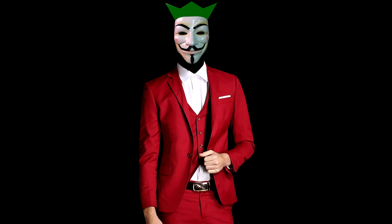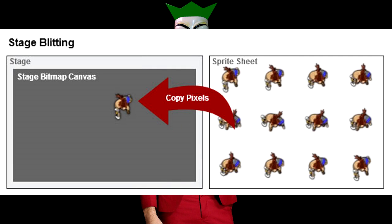And once you guys know that, we're going to put it to work. I'm going to go over loading a common binary file format from scratch — we're going to learn to load a bitmap file. Then we're going to use the pixels loaded from that bitmap to draw sprites, and we're going to learn about spriting operations like blitting, clipping, chroma keying, and alpha blending.